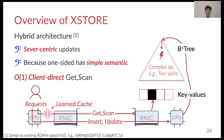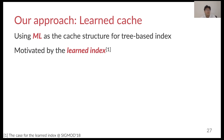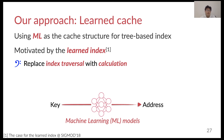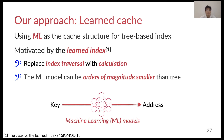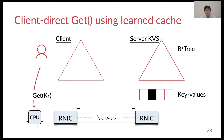We further utilize a learned cache with small memory footprint at the client, so that read-only lookups only use one round-trip time. More specifically, we use a machine learning model as a cache structure for the tree-based index. We are motivated by the learned index, a recently proposed technique, which gave us a key insight: we can replace the index traversal with the calculation of machine learning models. The machine learning models used have a nice feature — they are typically an order of magnitude smaller than a B-tree index.